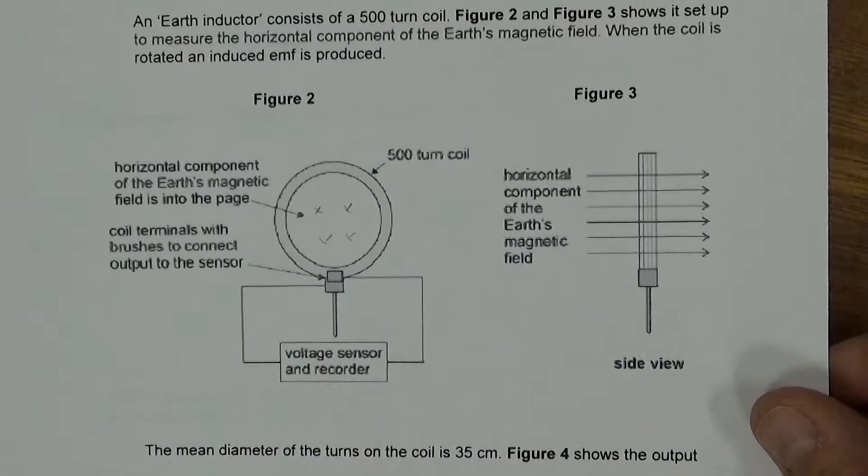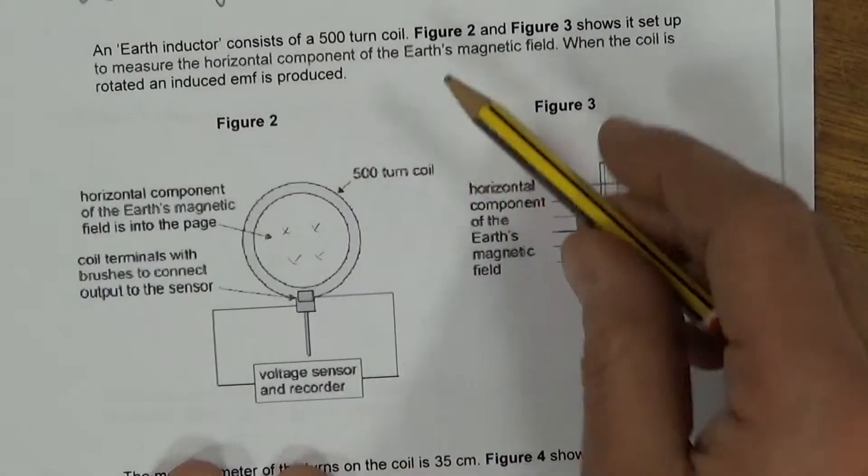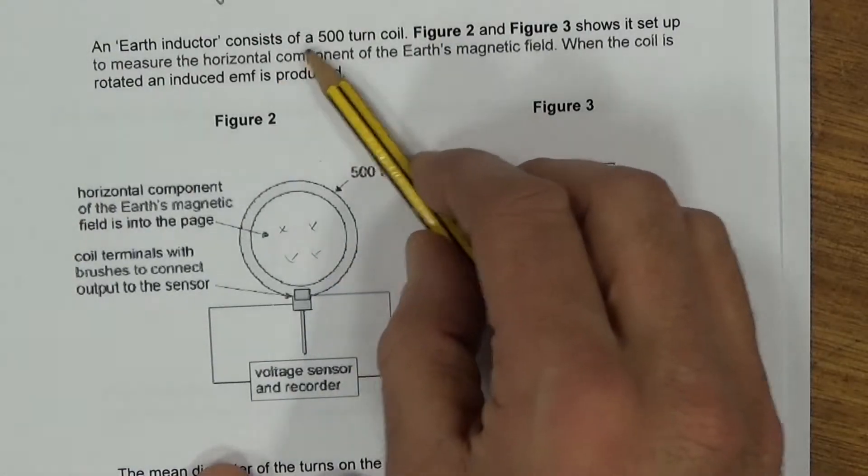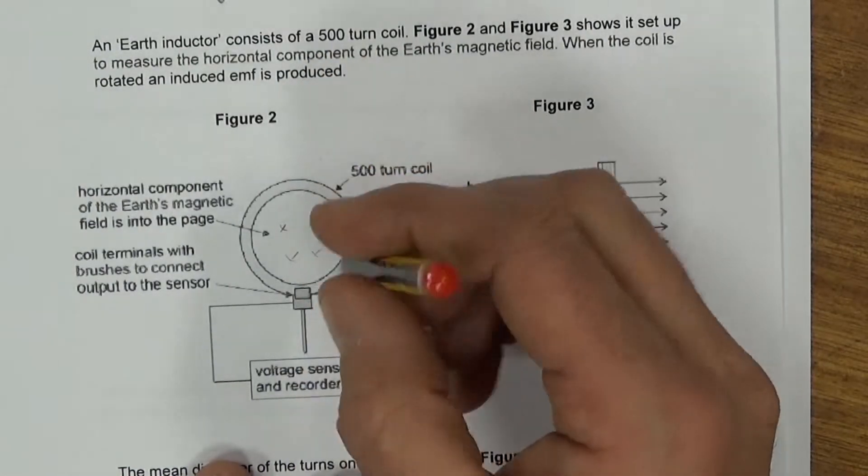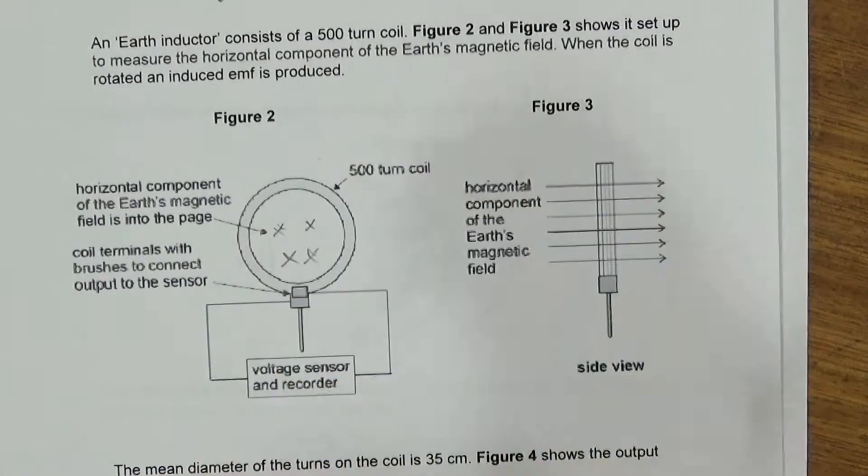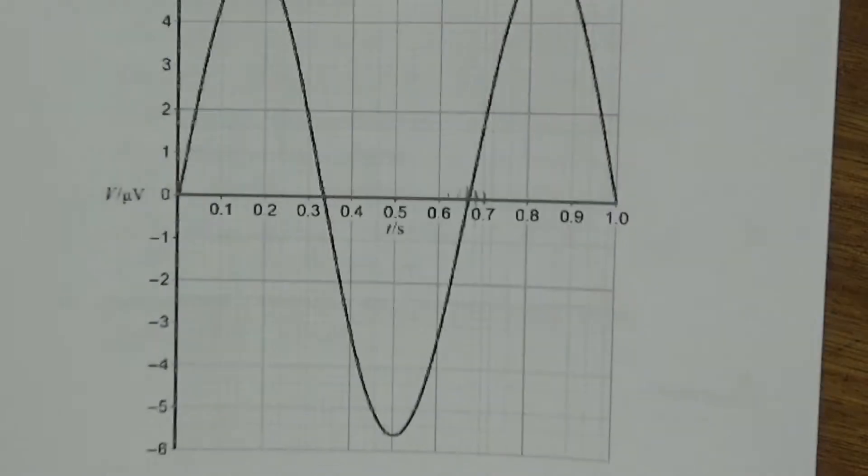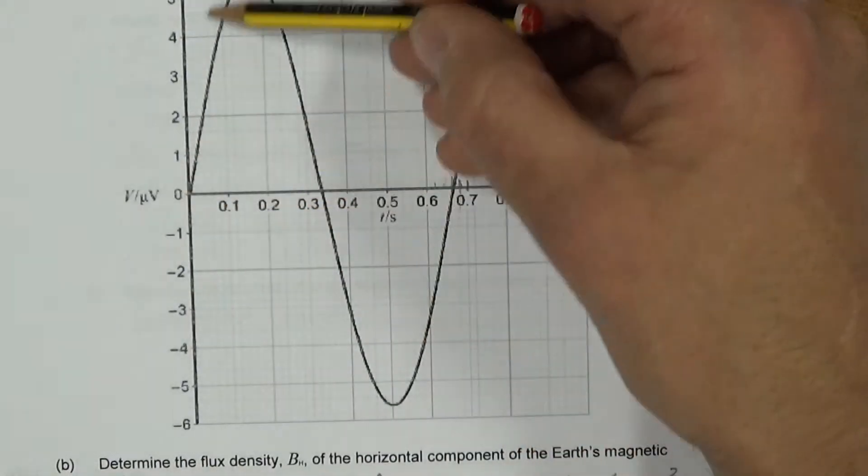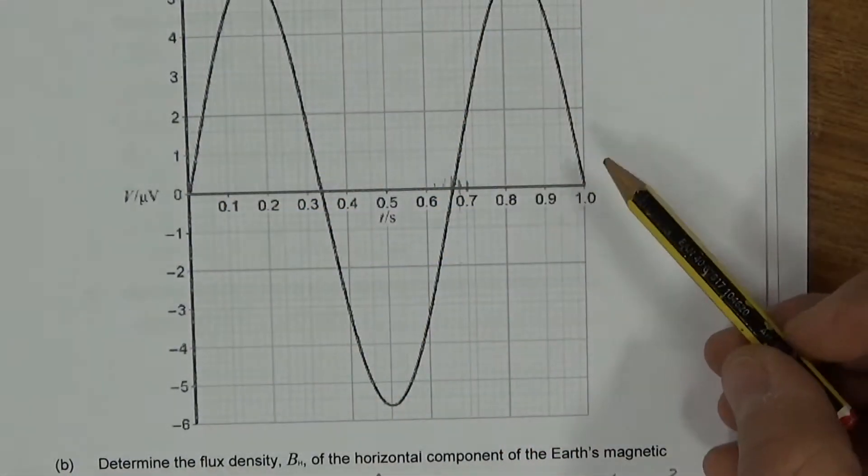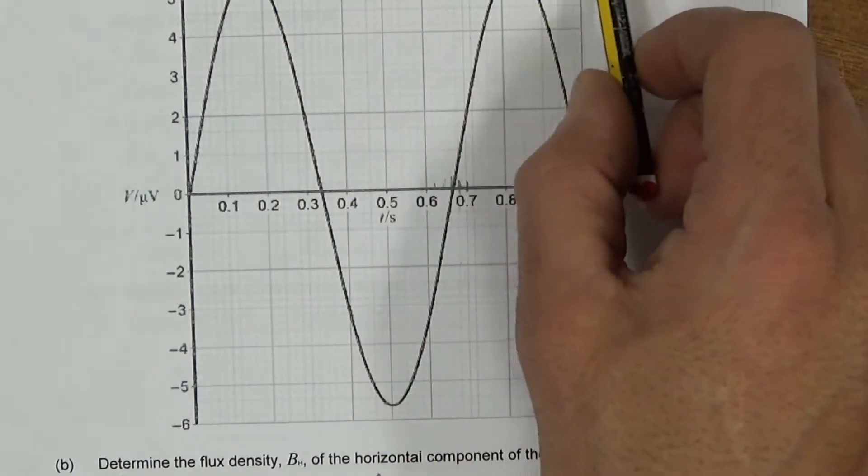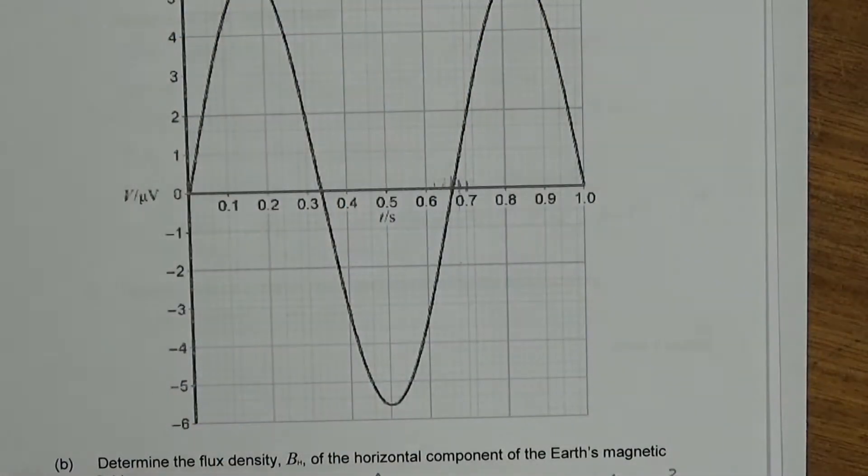Right, next one. The Earth inductor has a coil of 500 turns, says the component of the field is going into the page, those little X's going into there. And as it rotates, you get a voltage induced. It's recorded, rotated at 1.5 revolutions per second.